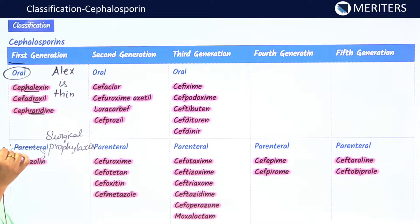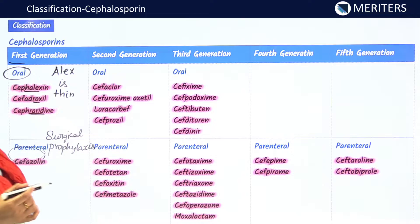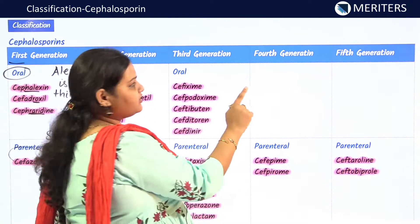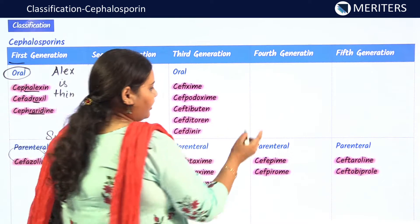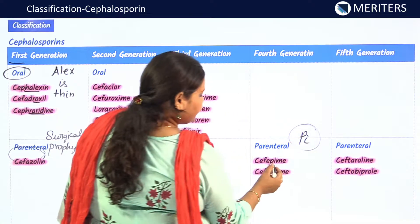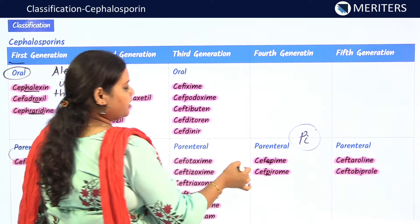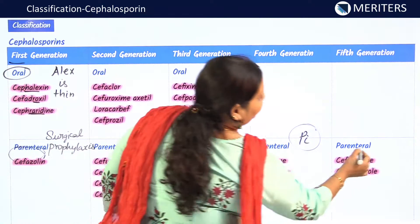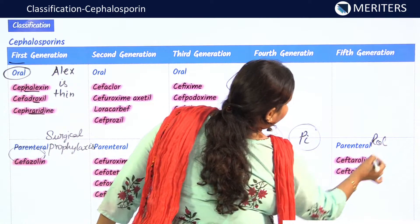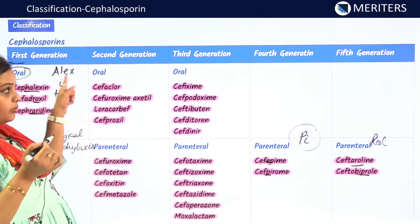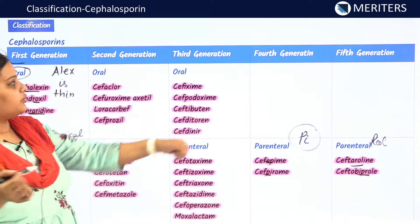First generation parenteral — cefazolin — is very important and used as surgical prophylaxis. For fourth generation, remember the word 'pi': cefepime and cefpirome. For fifth generation, remember 'rol': ceftaroline and ceftobiprole.